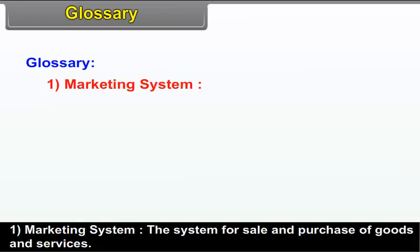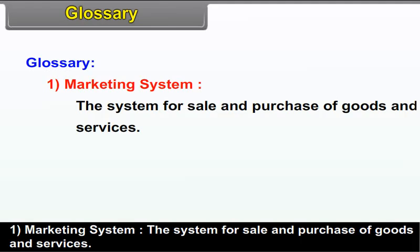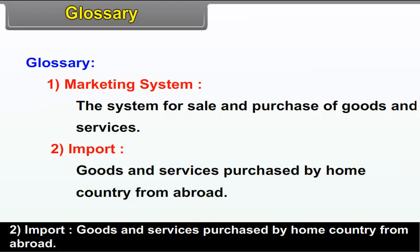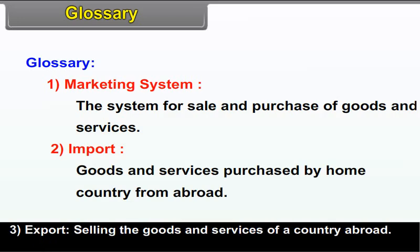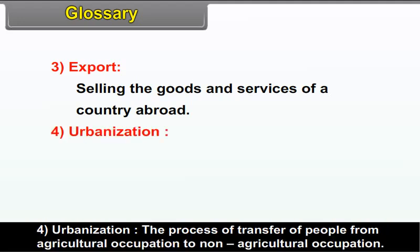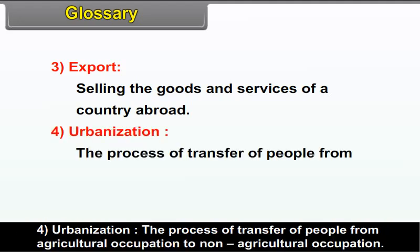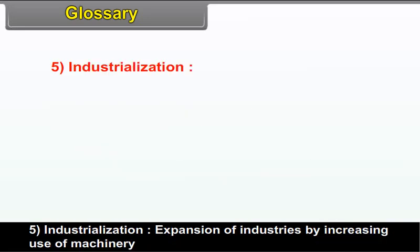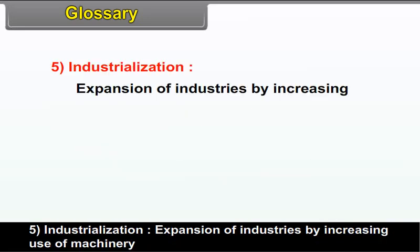Glossary. Marketing system: The system for sale and purchase of goods and services. Import: Goods and services purchased by home country from abroad. Export: Selling the goods and services of a country abroad. Urbanization: The process of transfer of people from agricultural occupation to non-agricultural occupation. Industrialization: Expansion of industries by increasing the use of machinery.